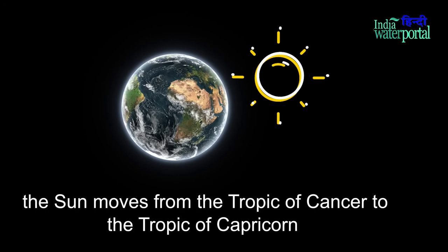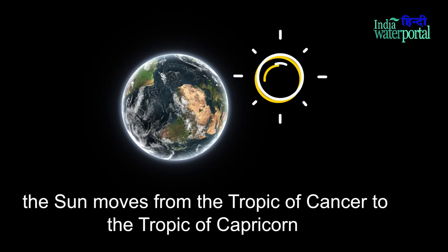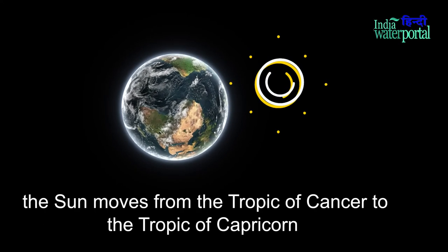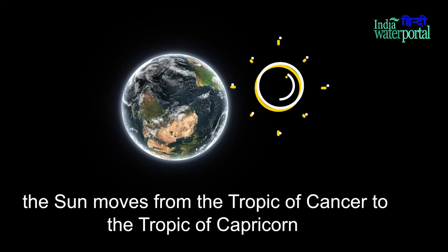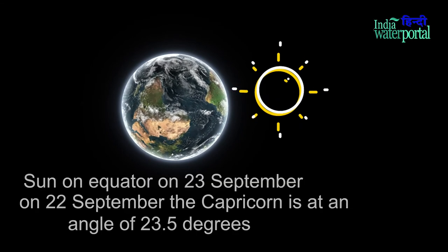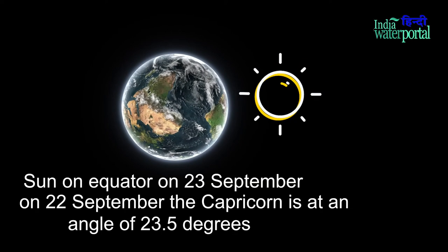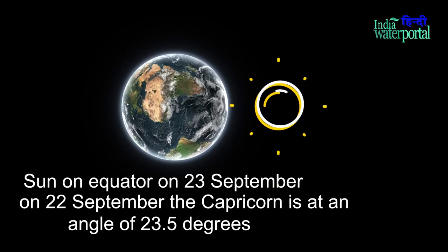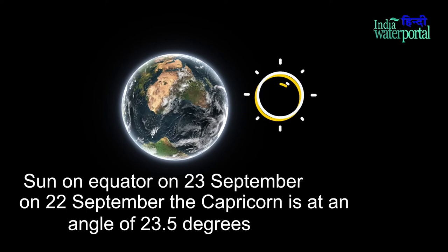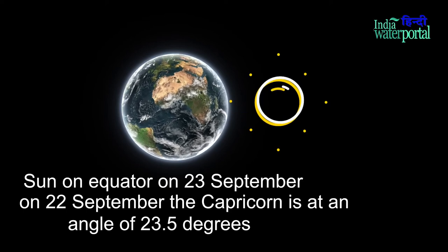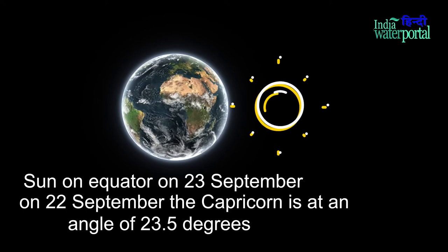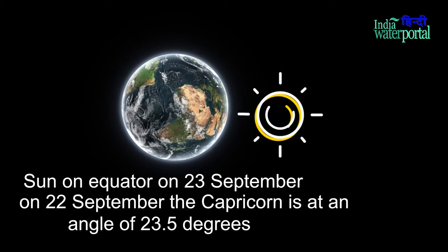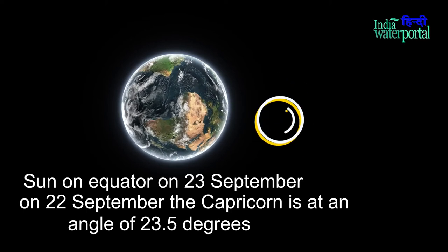The sun moves from the Tropic of Cancer to the Tropic of Capricorn. The sun is on the equator on 23rd September, and by 22nd December, the Capricorn is at an angle of 23.5 degrees.